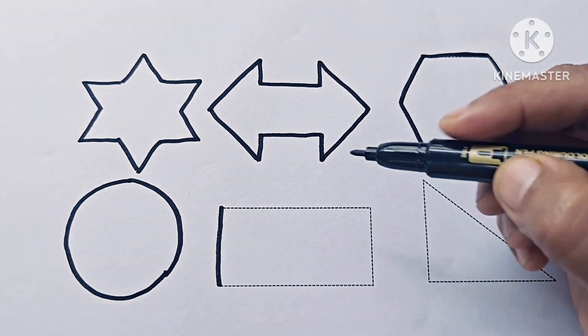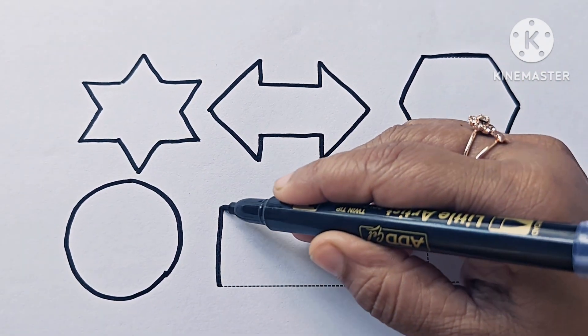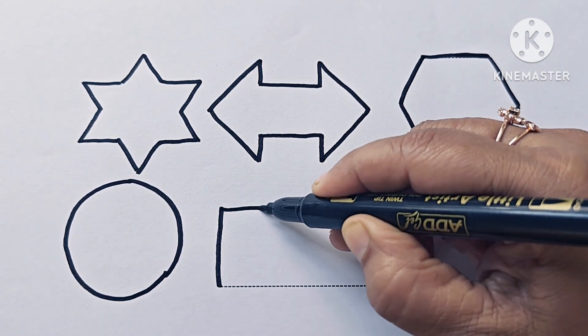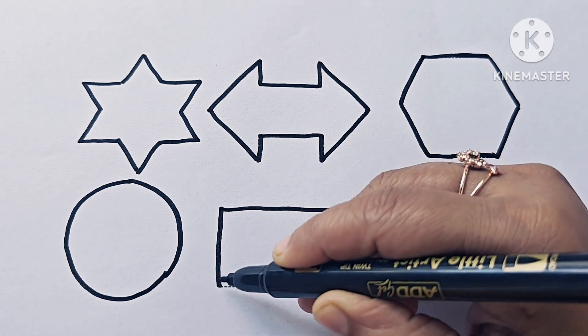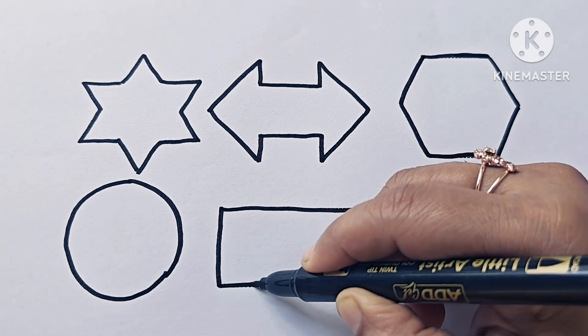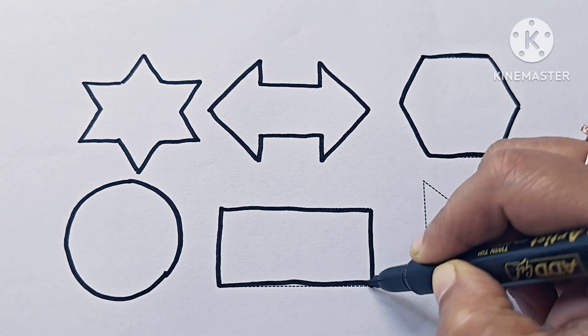This is a rectangle. It has four sides, four vertices, and four corners. It is a 2D shape, and opposite sides are equal.